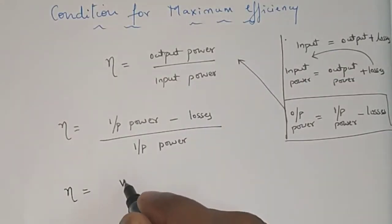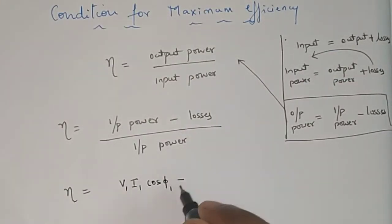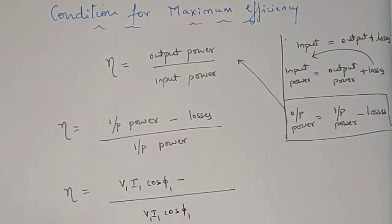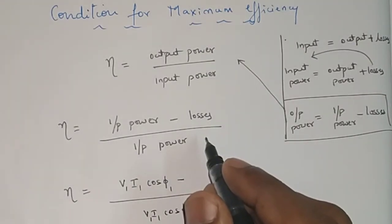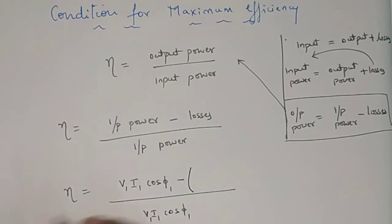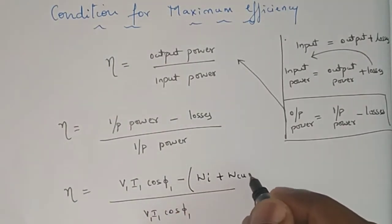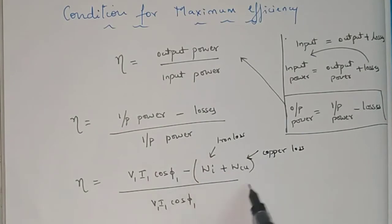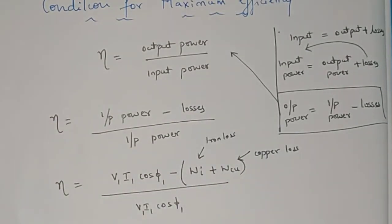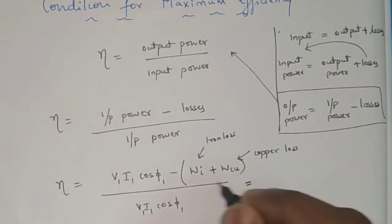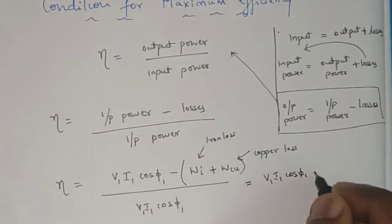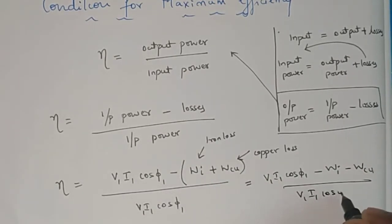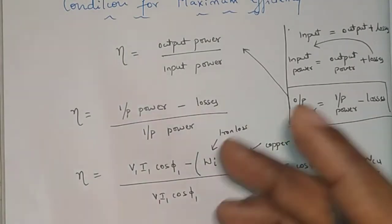So eta is equal to V1·I1·cos φ1 minus losses in the numerator, divided by V1·I1·cos φ1 in the denominator. Now, what are the losses in the transformer? We know the total losses in a transformer are iron loss plus copper loss. I will represent Wi as iron loss and Wcu as copper loss. So total losses are iron loss plus copper loss. Multiplying the negative sign inside the bracket and simplifying, I will get V1·I1·cos φ1 minus iron loss minus copper loss, divided by V1·I1·cos φ1.